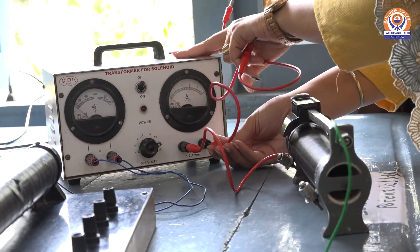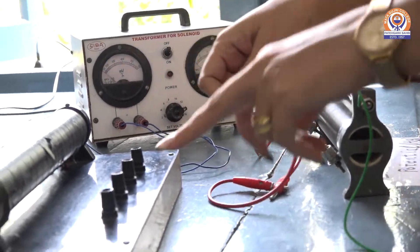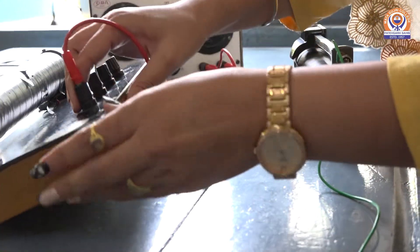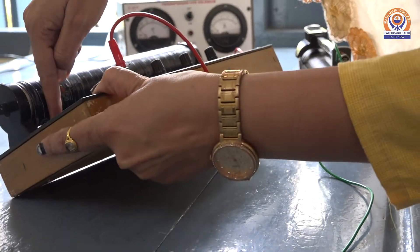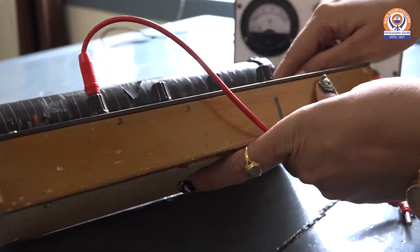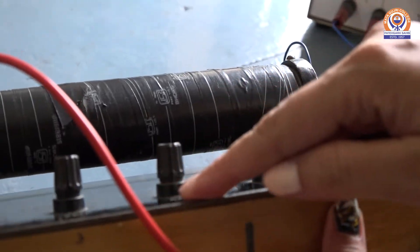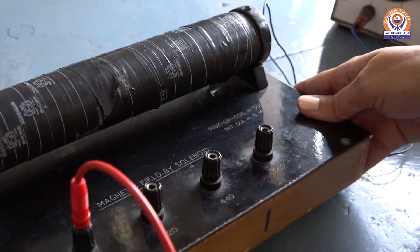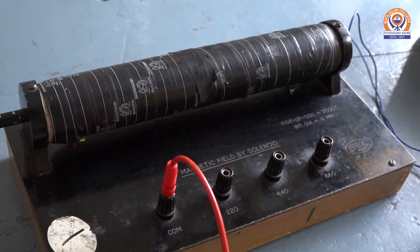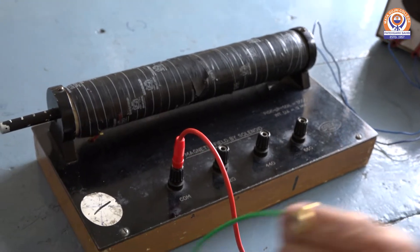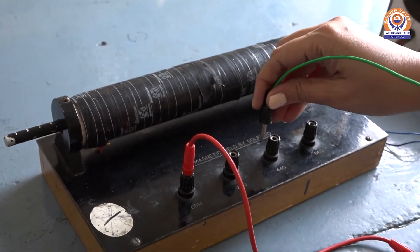This is rheostat which is connected to the ampere meter. The other end of the ampere meter is connected to the common of the solenoid. This side is connected to the common of solenoid and this connection is for the different turns of the solenoid. The other end of the rheostat is connected to the different number of turns.